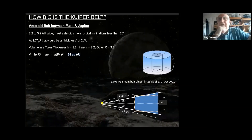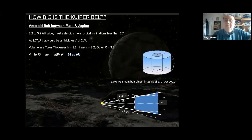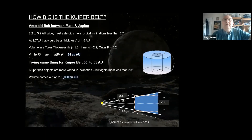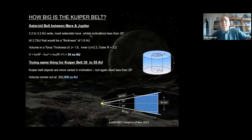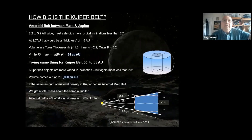About two years ago there were over a million main belt objects listed, and probably a lot more now because modern telescopes are pulling hundreds out every month. Doing the same calculation for the Kuiper Belt — say 30 to 55 AU, still using 20 degrees inclination — we get a volume of about 200,000 cubic AU. It's a far bigger space. As of November 2021, there are only 4,008 KBOs listed.